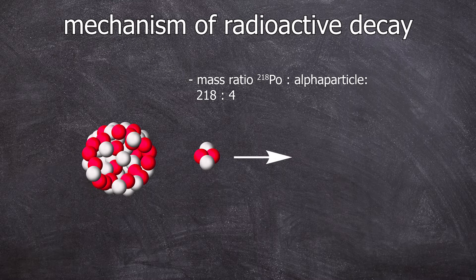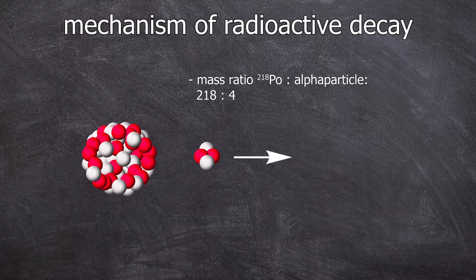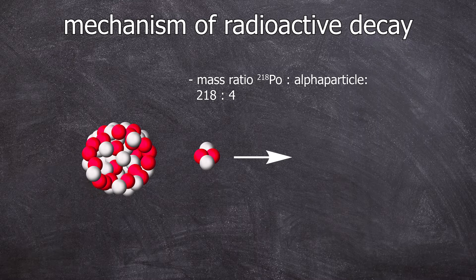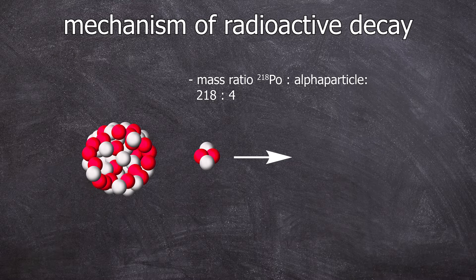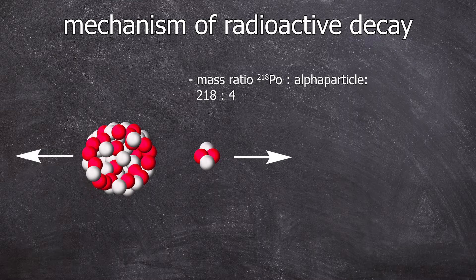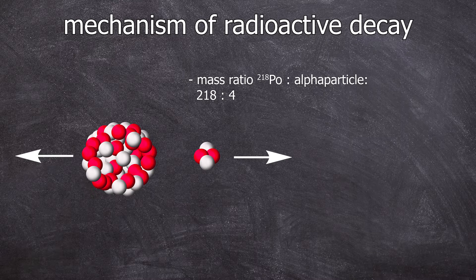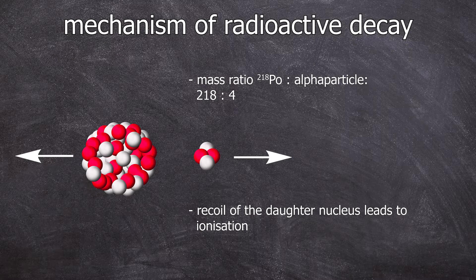When it's ejected, it has a certain momentum. According to the law of conservation of momentum, the resulting polonium 218 nucleus must also receive a momentum in the opposite direction. In this momentum, there is enough energy to surpass the ionization energies of some valence electrons.